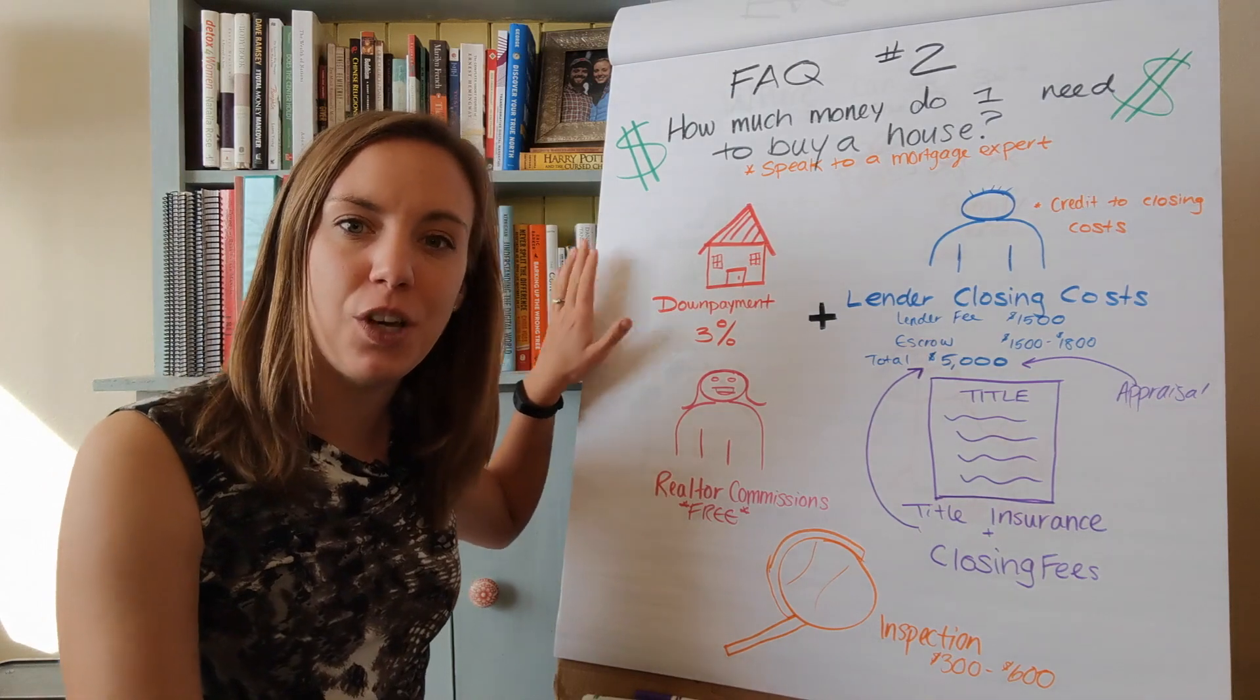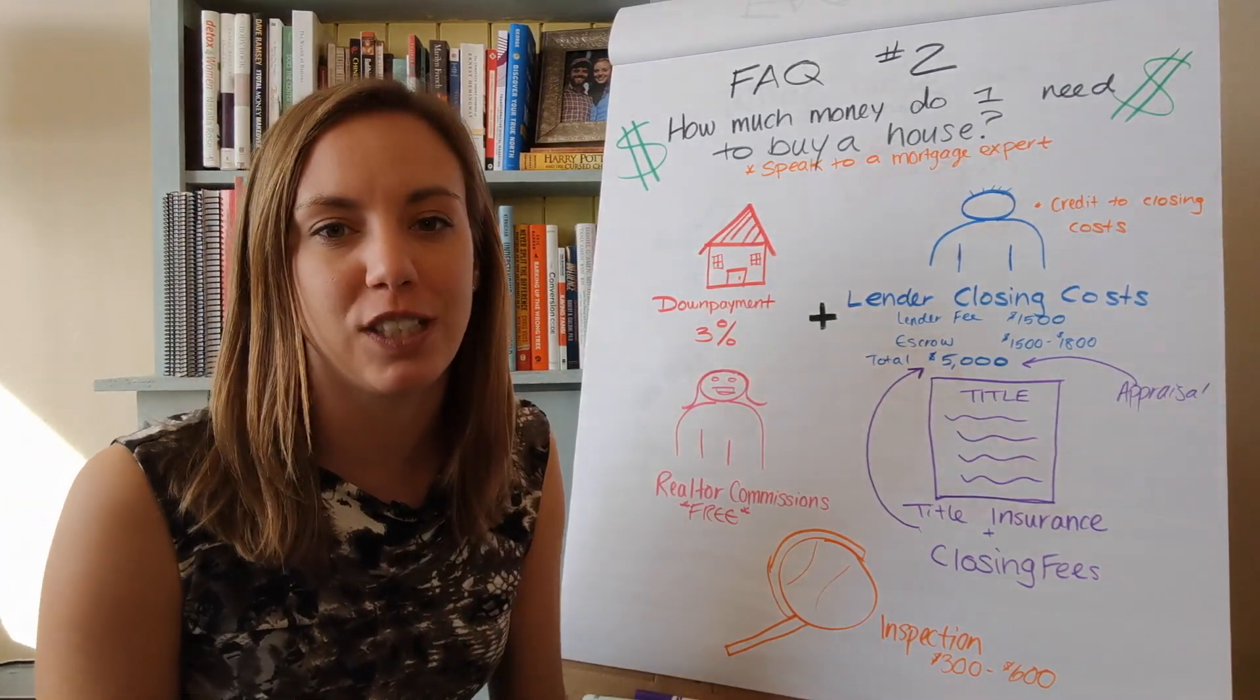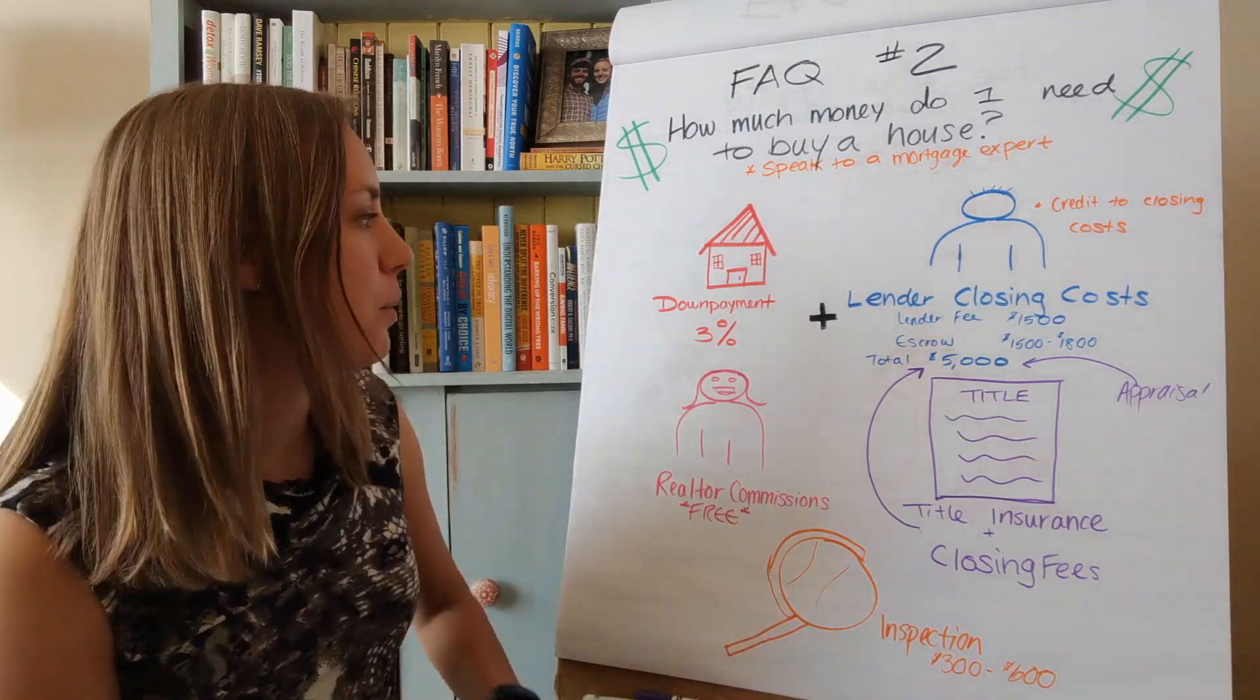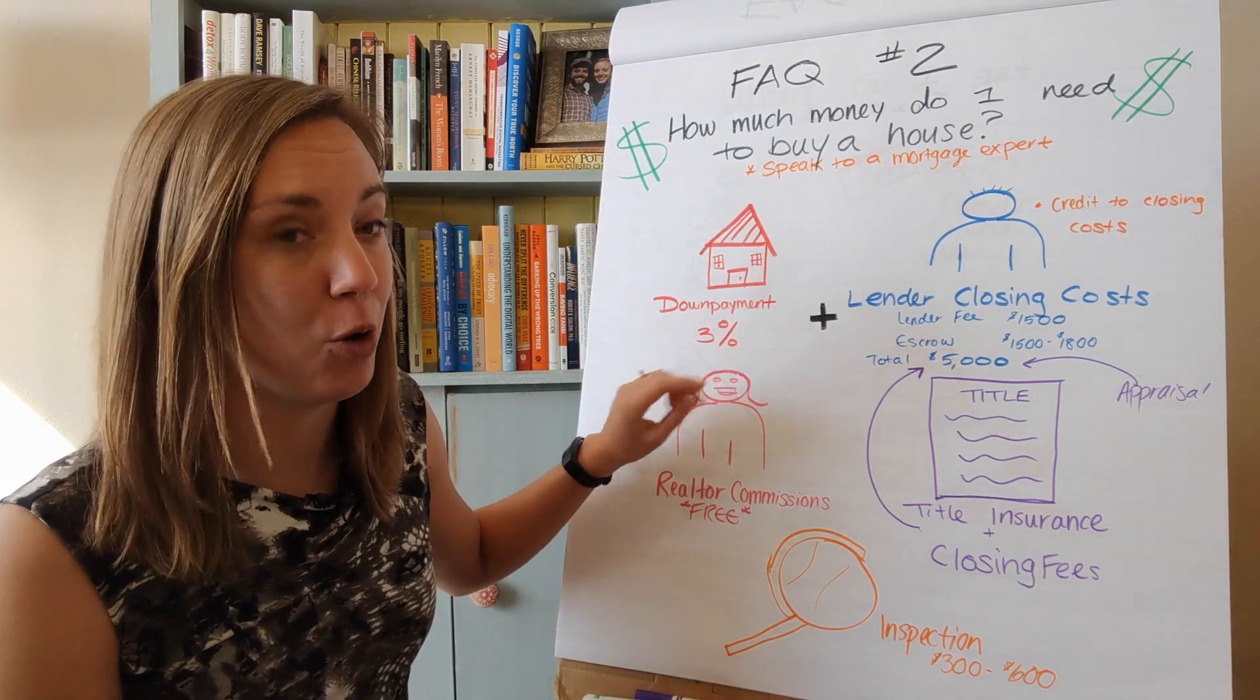Right now you can get a conventional loan for only 3% down. That's awesome. So if you have no interest in any other real estate and you're on no other titles, you can put 3% down and get your first time home, which is great.